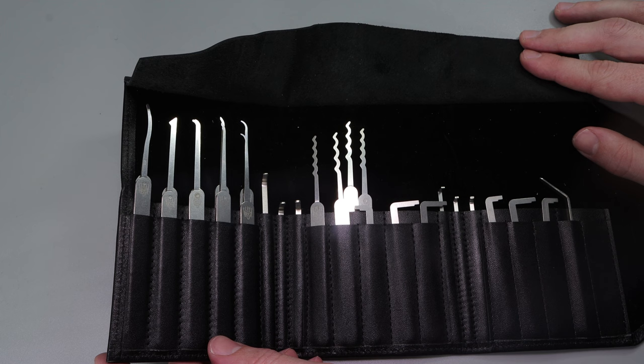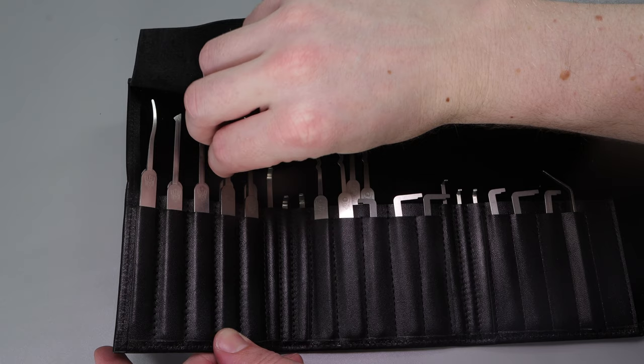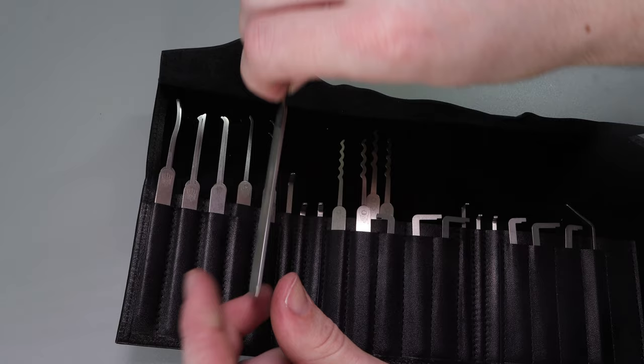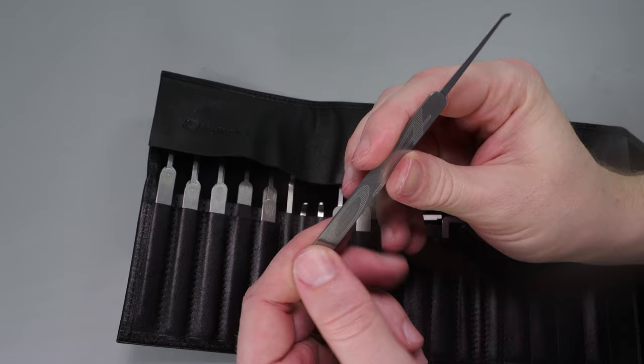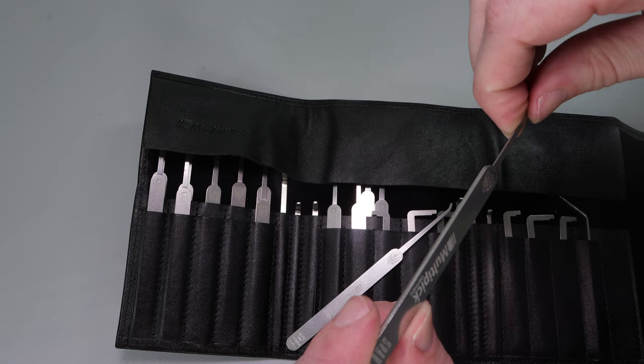Typically on American Locks, I like to just use a short hook. One of my favorite picks is the Peterson Gem in 0.018 thousandths, but anything from 0.025 to 0.018 should do pretty well. I'm going to use this pick right here, and I believe all of their picks are 0.6 millimeters thick, which this one does have written on it right here.